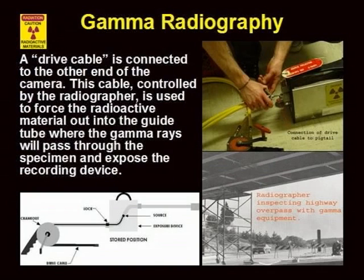This slide illustrates the entire gamma radiography system. The radiographer uses the drive cable to force the radioactive material into the guide tube, which has been placed where the exposure is to be taken. It is very important that all portions of this system be well maintained, such that the radioactive material can always be safely returned to the camera after use.